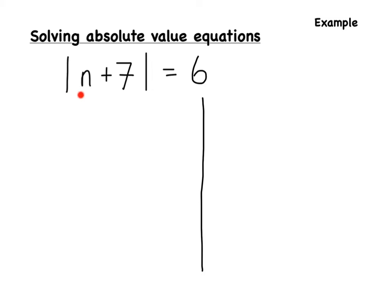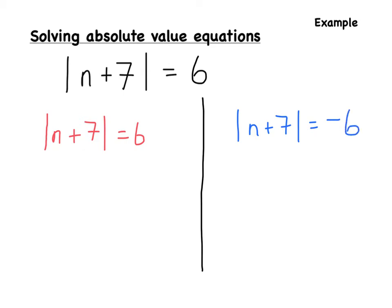Let's try another one. We have the absolute value of n plus 7 is equal to 6. We write it as a positive and as a negative. First: absolute value of n plus 7 equals 6. Second: absolute value of n plus 7 equals negative 6. Solving the first — subtract 7 from both sides — n equals 6 minus 7, which is negative 1.